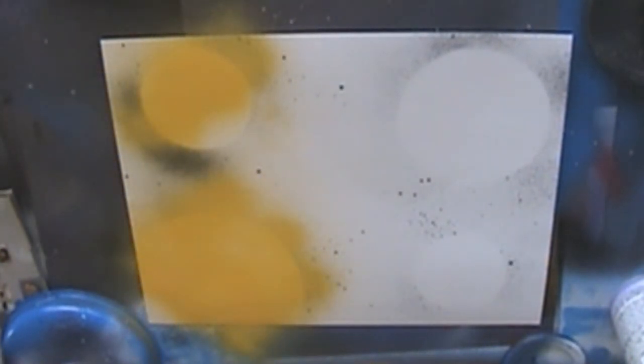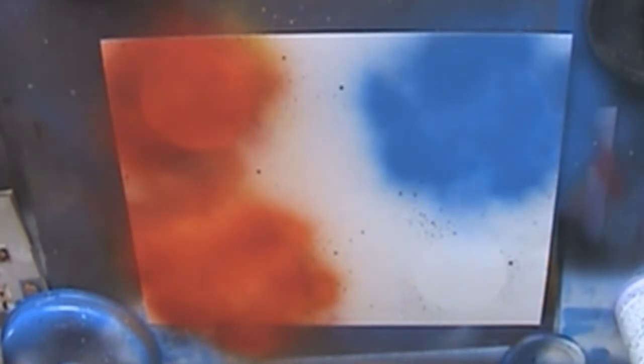For my planets on the left I'm using yellow, orange, and red. As you can see I'm keeping the paint very light, just enough to cover.